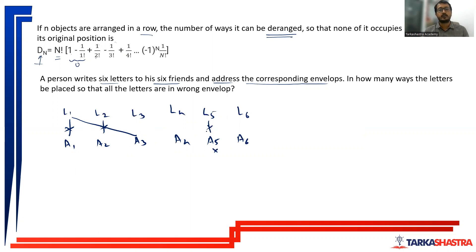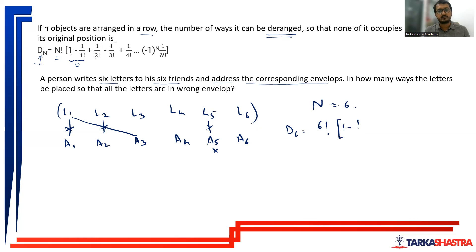So, how do we do that? The number of elements we have are 6, so n is equal to 6. Derangement of 6 objects will be 6! times (1 minus 1/1! plus 1/2! minus 1/3! plus 1/4! minus 1/5! plus 1/6!).